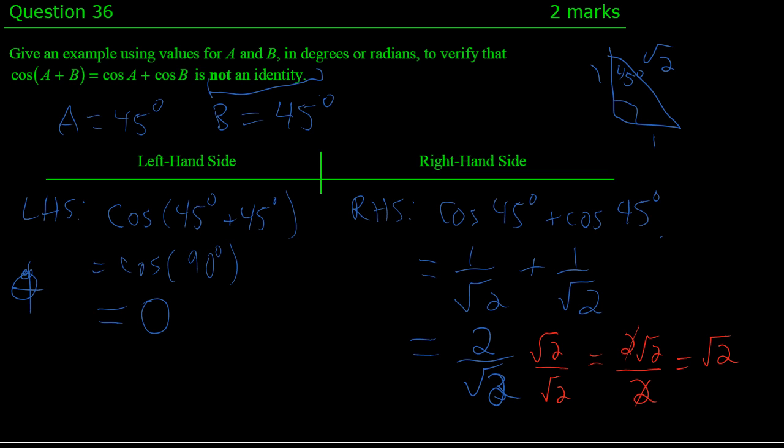So obviously, 0 is not equal to root 2. So the expression is not an identity. To show something is not an identity, you just have to prove it's not true for one particular value. To show something is an identity, you have to prove it's true for all values. So I'm assuming this satisfies the two marks for this problem.